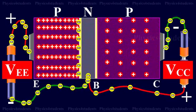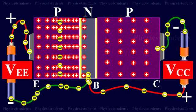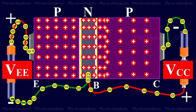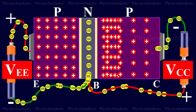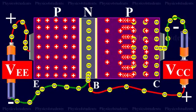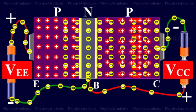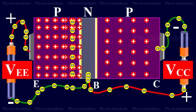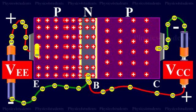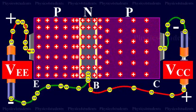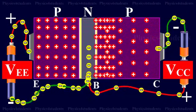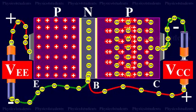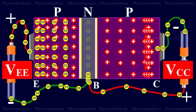The flow of holes from the emitter to the base gives rise to emitter current IE. In the emitter, IE is due to the flow of holes, but in the external circuit the current is due to the flow of electrons from the emitter to the positive terminal of the battery VEE.